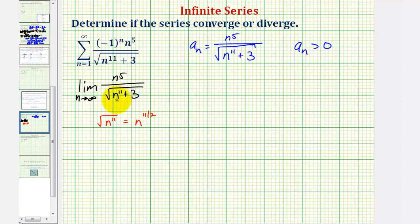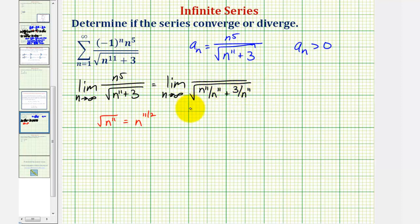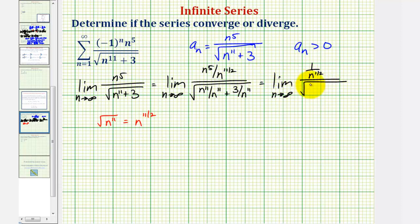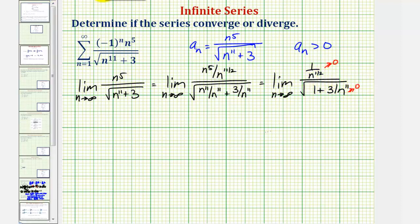To show the full work, we divide everything by the square root of n to the eleventh. The limit as n approaches infinity gives us, in the numerator, n to the fifth divided by n to the eleven-halves, which is one divided by n to the one-half. The denominator becomes the square root of one plus three divided by n to the eleventh. As n approaches infinity, the numerator approaches zero, three over n to the eleventh approaches zero, and the denominator stays at one — so this limit equals zero.